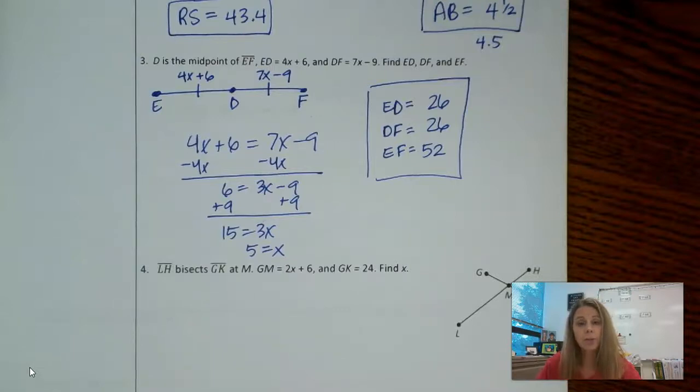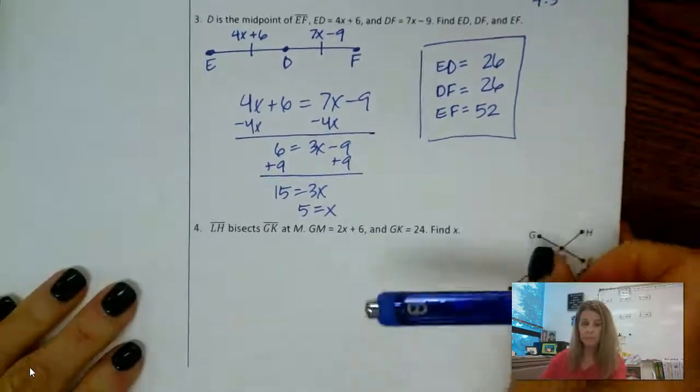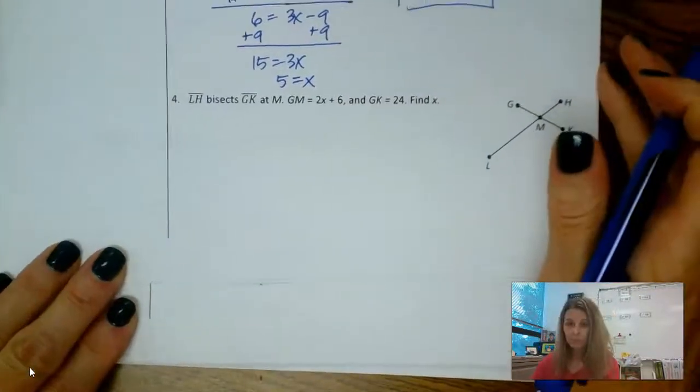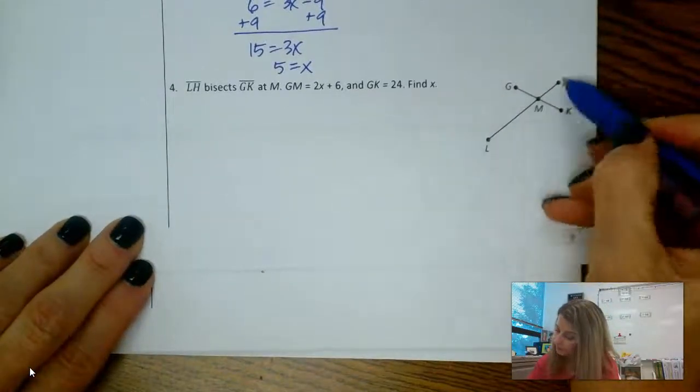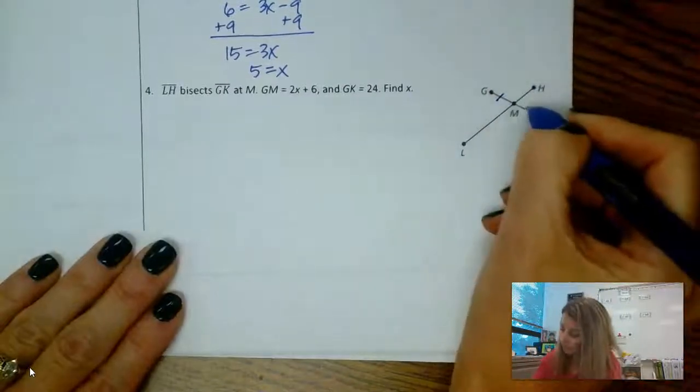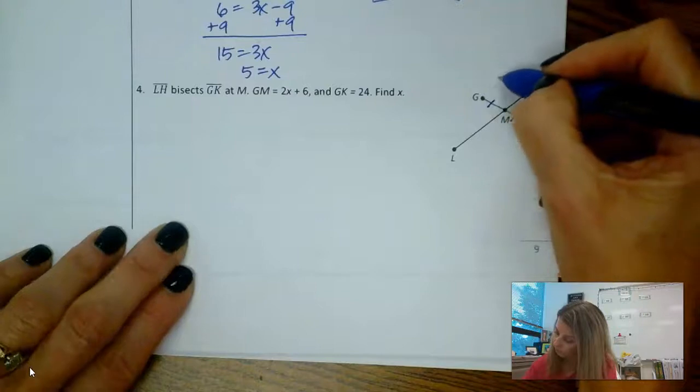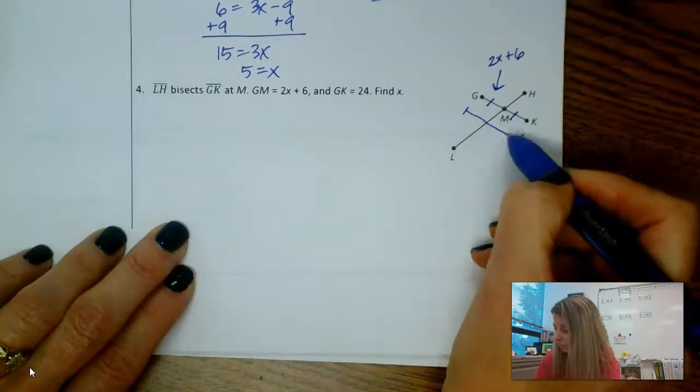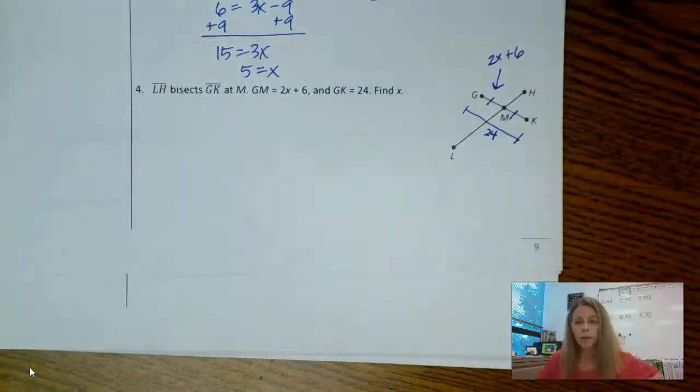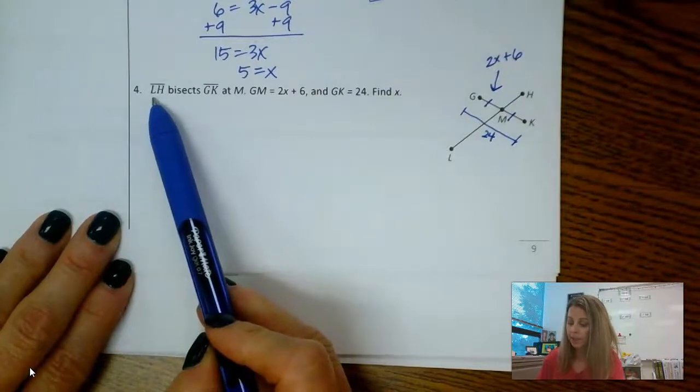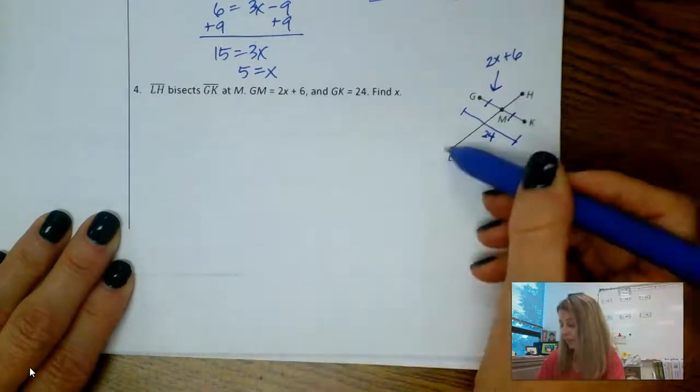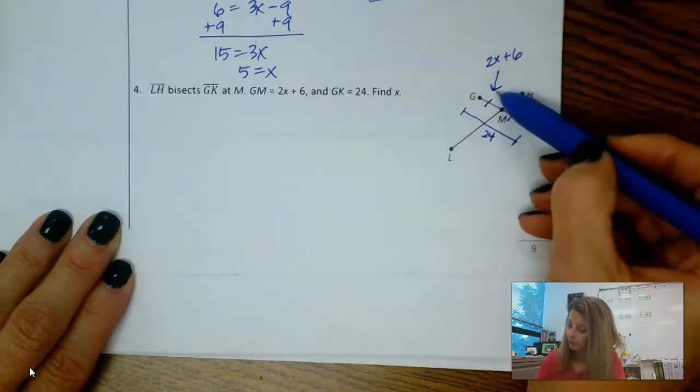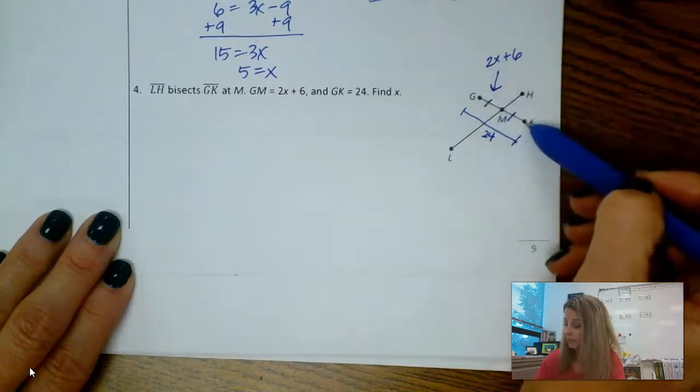All right, why don't you try number 4? I want you to pause it, try to mark on your picture and see if you can get some things set up. Okay, sentence number one: LH bisects GK at point M. So LH is bisecting GK, it's cutting GK in half. Therefore I added the midpoint. I labeled GM to be 2X minus 6, and the whole length of GK is 26.